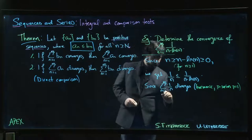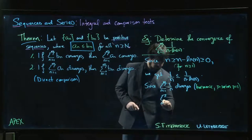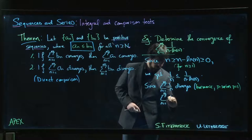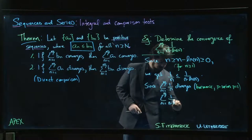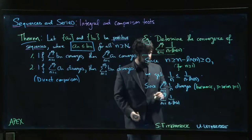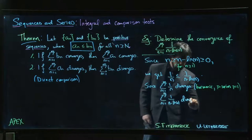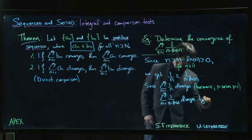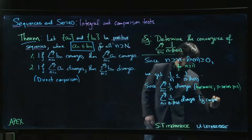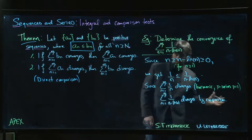We know that this series here, 1 over n minus log of n, that has to also diverge by comparison. And that's it. We're done.